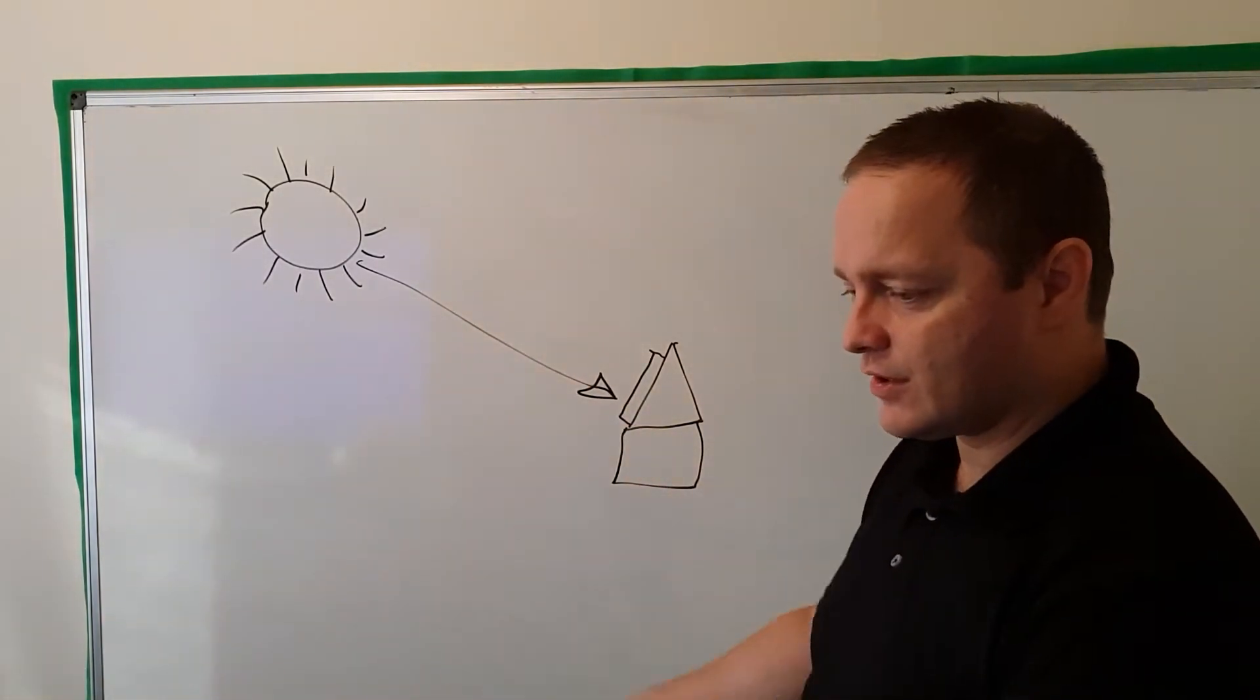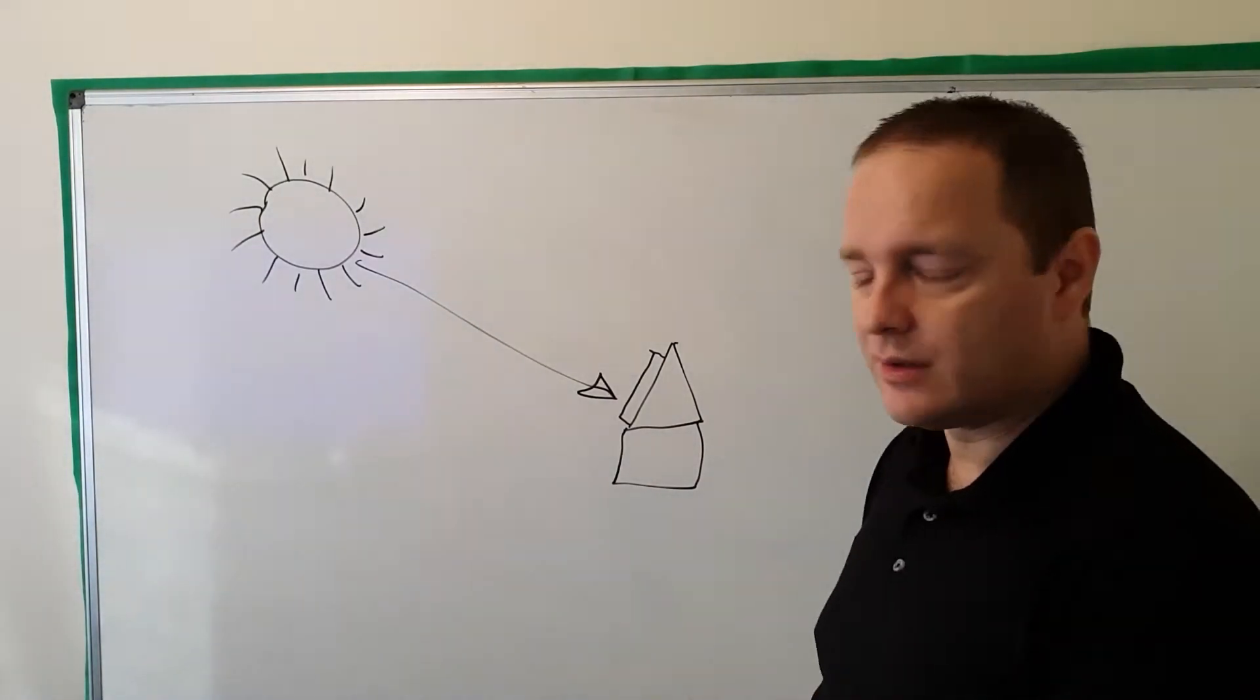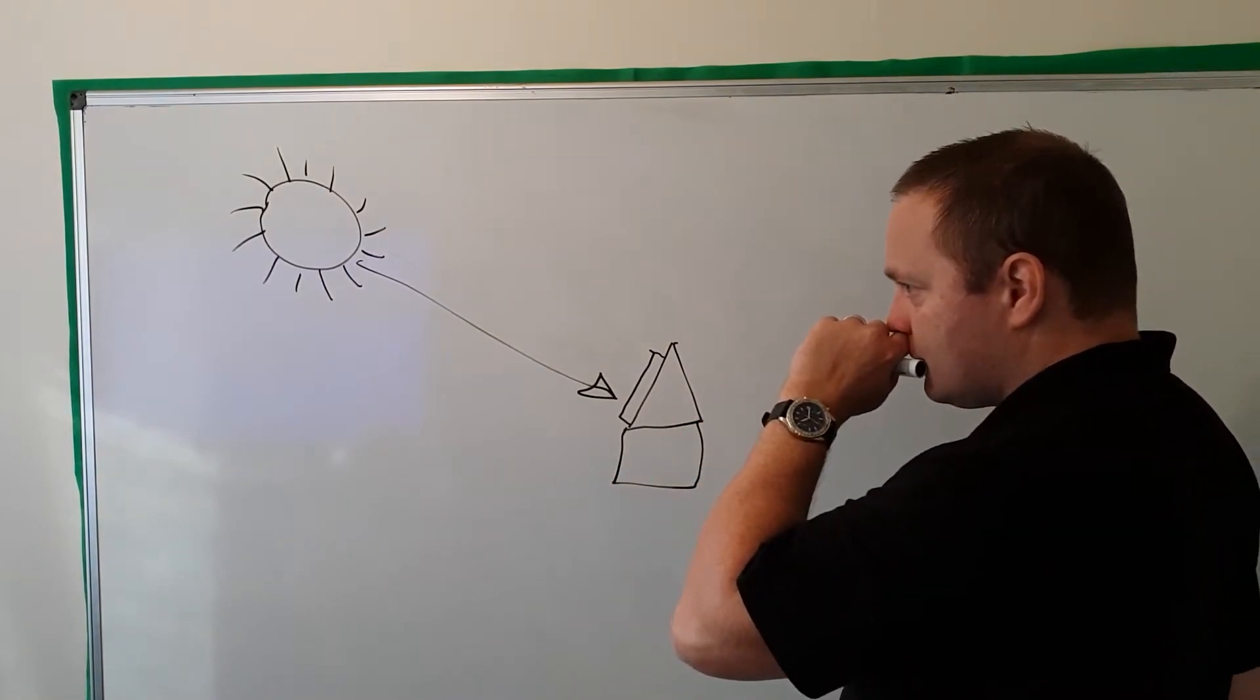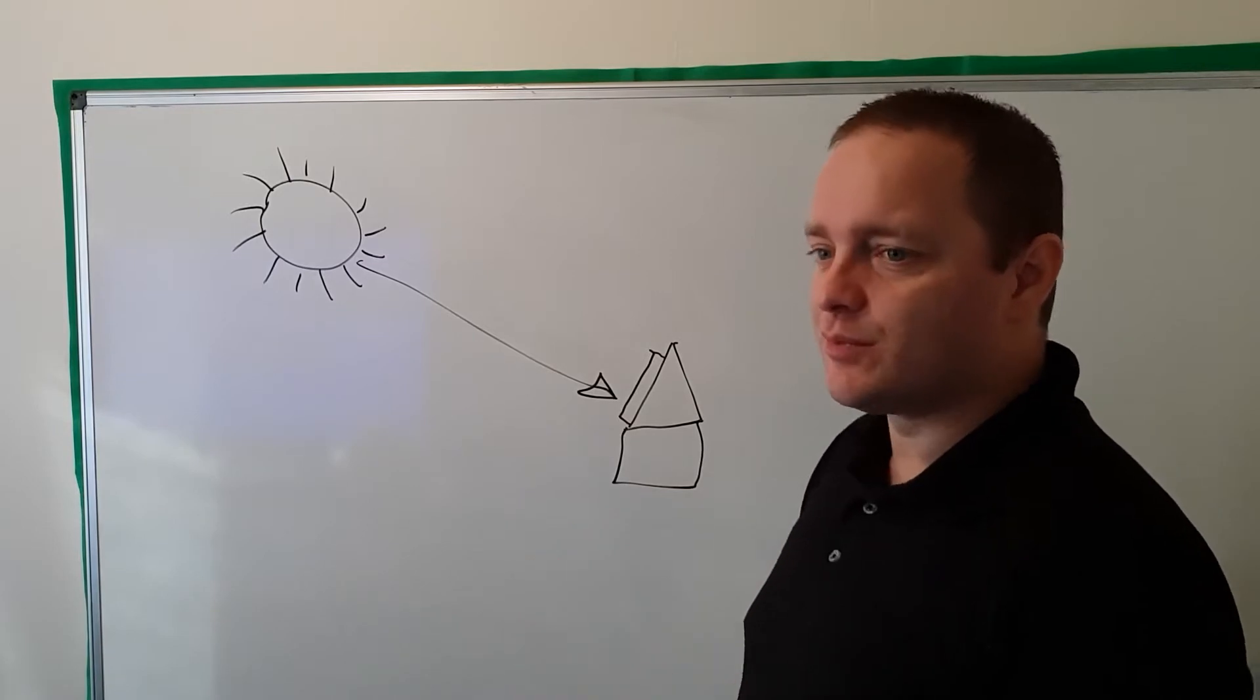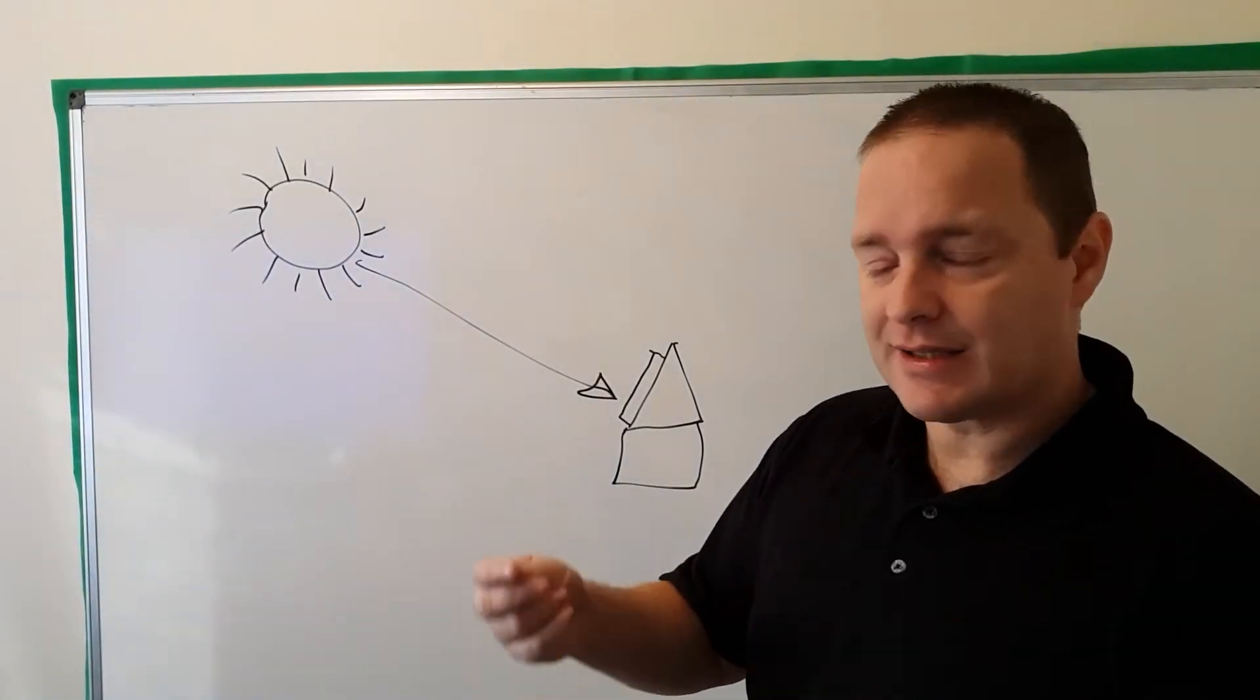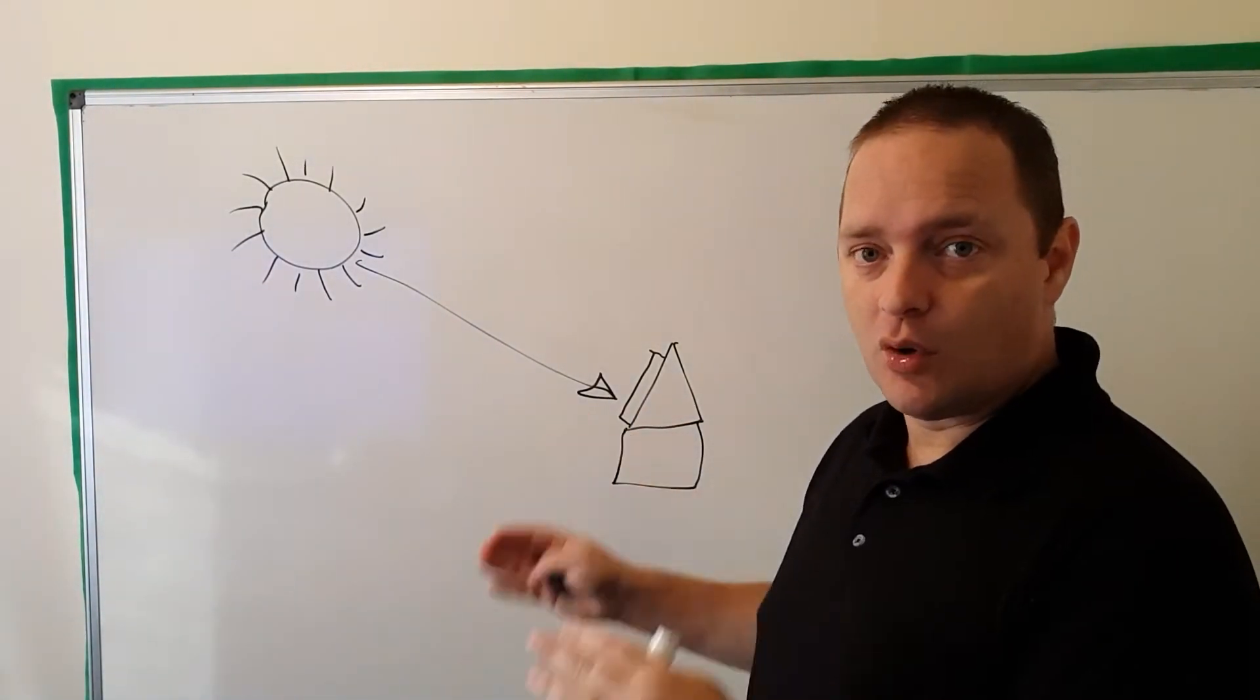So essentially it goes through an inverter, converts from direct current to alternating current, and that's essentially what we use in the household electrics. Now, this is almost common sense: the more sun you have, the more generation you get, which is fine. So in summer you expect to generate more than you would in winter.